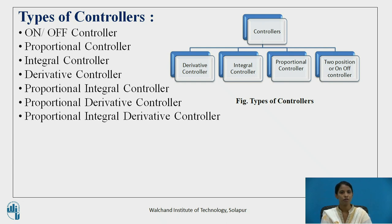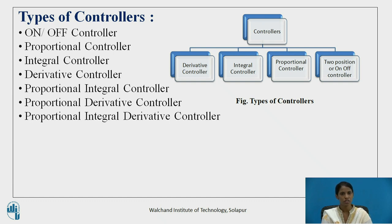The types of controllers used in control systems are: first, a simple on-off controller; second, proportional controller; third, integral controller; fourth, derivative controller; fifth, proportional plus integral controller; sixth, proportional plus derivative controller; and seventh, proportional integral derivative controller.